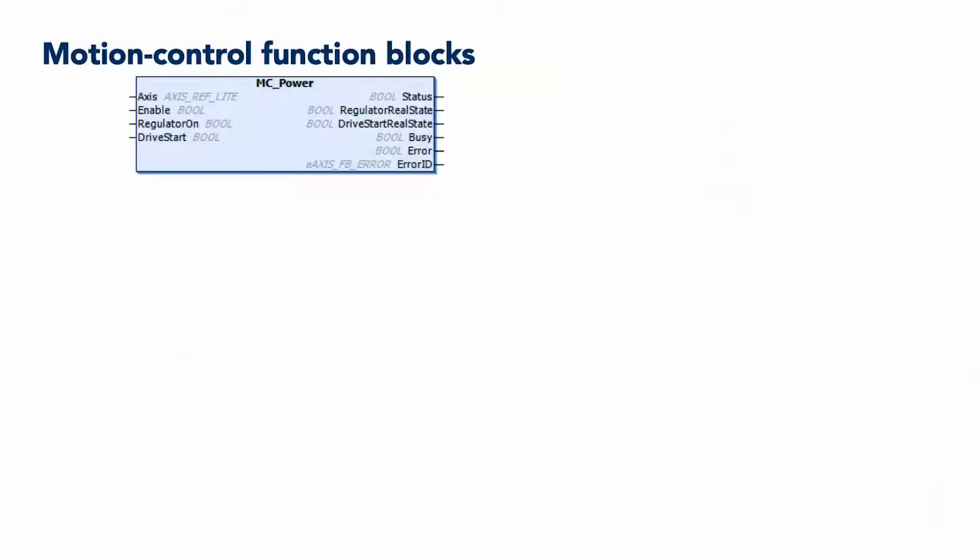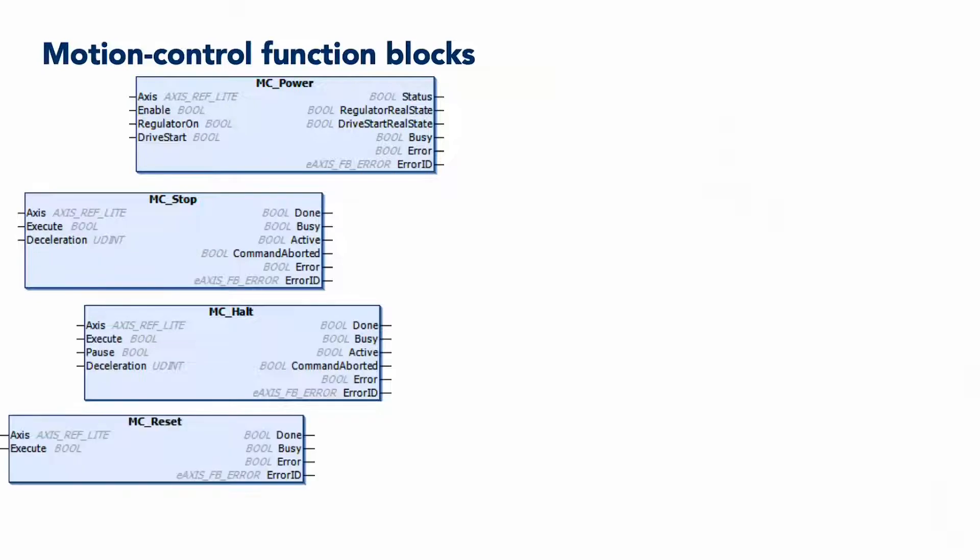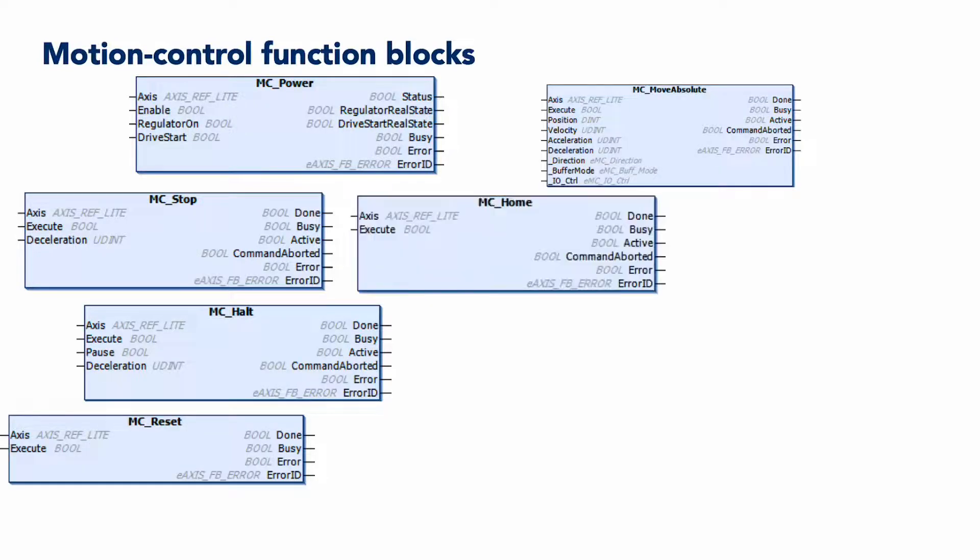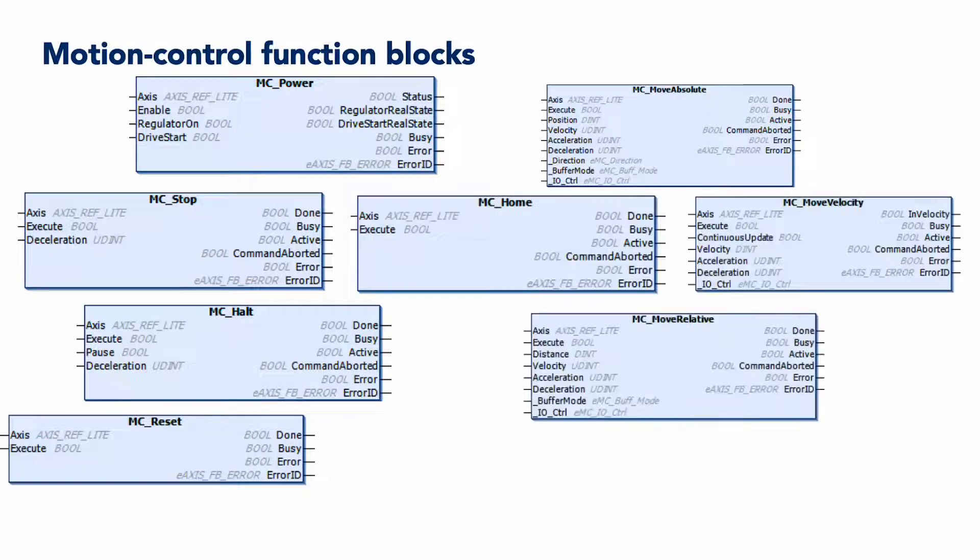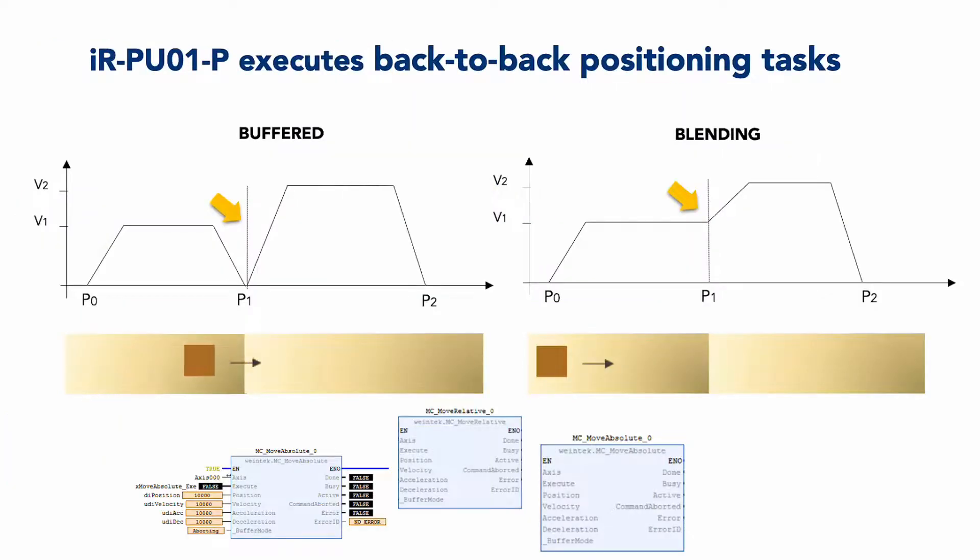More specifically, the IRPU01P single-axis motion control modules execute motion controls such as positioning, including a buffer mode, speed control, capture, jerk, and homing via 37 different methods, and a digital cam switch function using four digital output points.